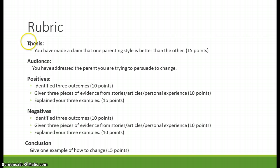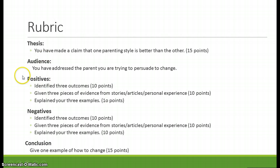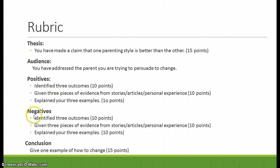The rubric breaks down like this. A thesis — you make a claim that one style is better than the other — is worth 15 points. Audience — you have to directly speak to one of the parents; remember, they're fictional, they're not going to get mad at you — is worth 10 points. For positives, you identify three positive outcomes (10 points), give evidence (10 points), and explain them (10 points). Then do the same for negatives: three things that are wrong, give evidence, and explain your evidence — that's another 30 points. If you do not give evidence and explain these three things, you're losing 60 points. That's a lot of points.